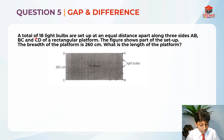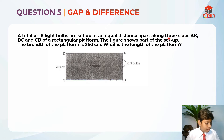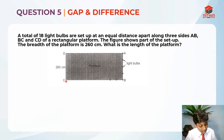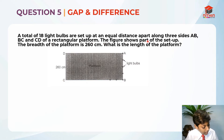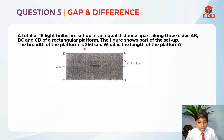A total of 18 light bulbs are set up at an equal distance apart along 3 sides AB, BC and CD of a rectangular platform. The figure shows part of the setup. The breadth of the platform is 260 cm. What is the length of the platform?